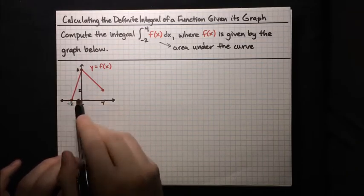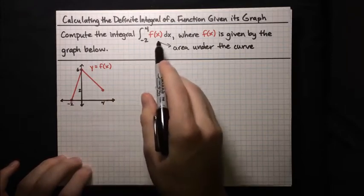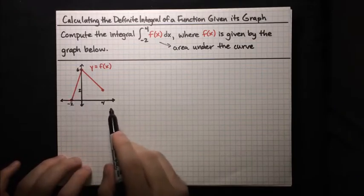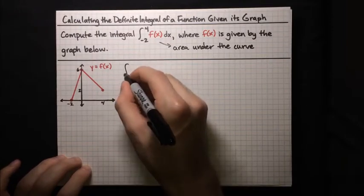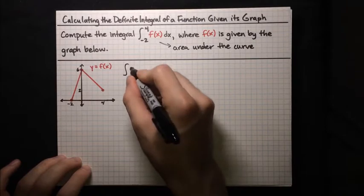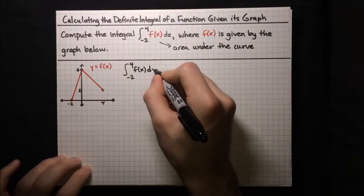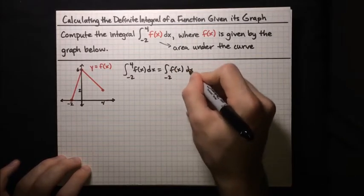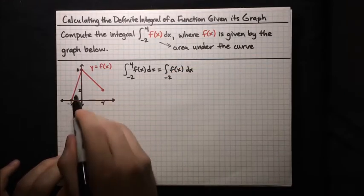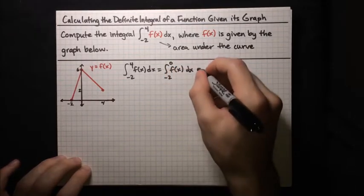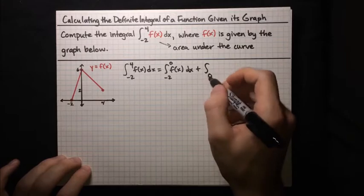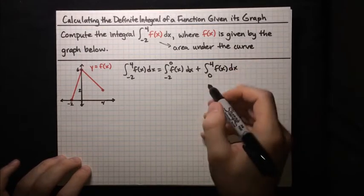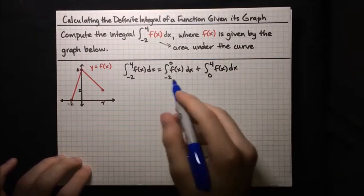There's a triangle here and a trapezoid here, so why don't we break this up into two integrals which are easier to compute — one that corresponds to the area of that triangle and one that corresponds to the area of the trapezoid. Using the property that integrals are additive, we can write the integral of f(x) from negative 2 to 4 as the integral from negative 2 to 0 — where the triangle's peak is at 0 — plus the integral from 0 to 4 of f(x) dx.